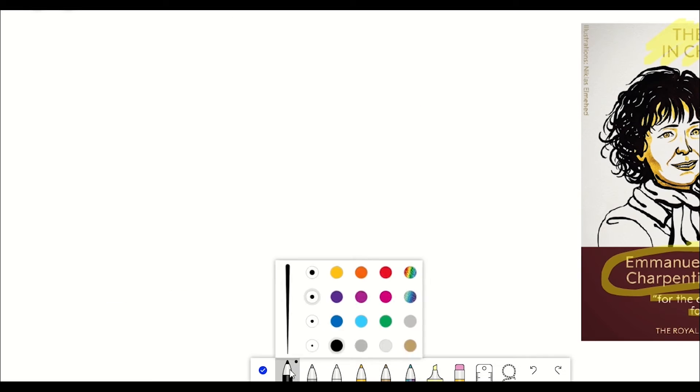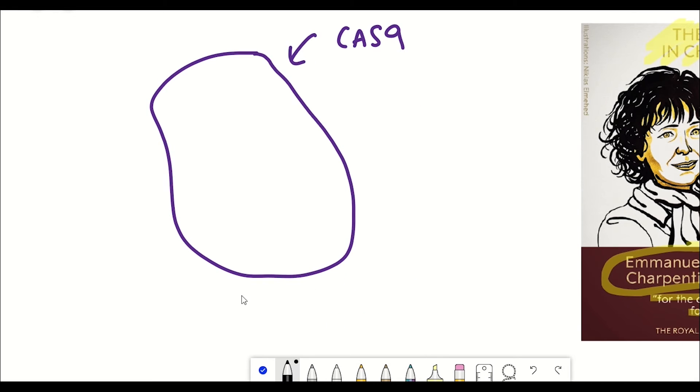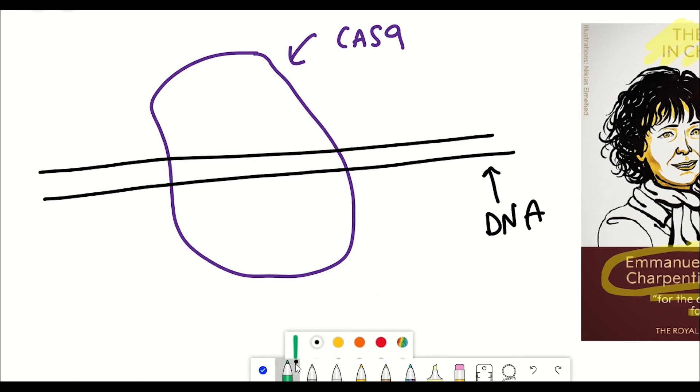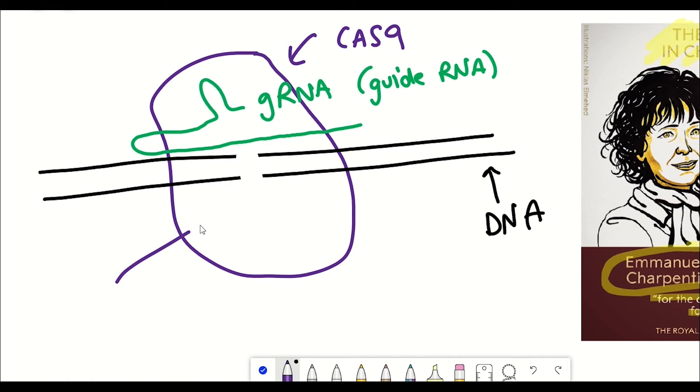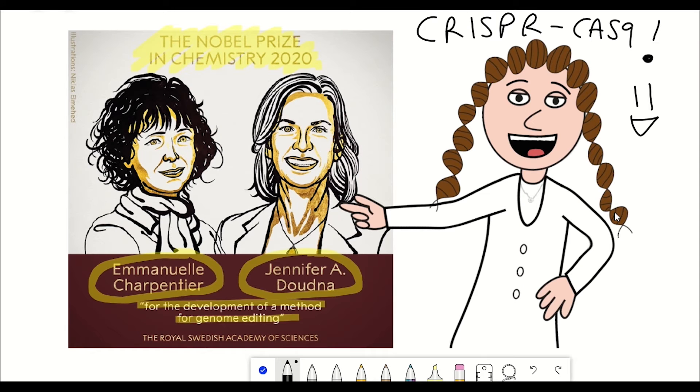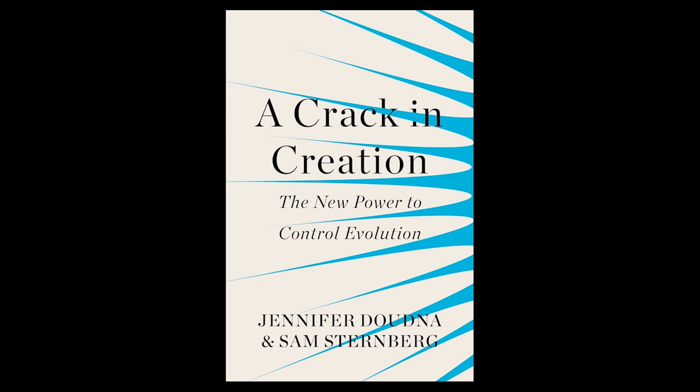Charpentier identified the RNA components of the machinery, and this caught the attention of Doudna, who was studying RNA. Now, I haven't done either of them full justice here, but you can read full details about this discovery in a couple of books now, so if interested, you should check those out.